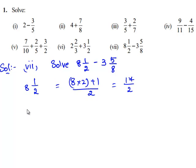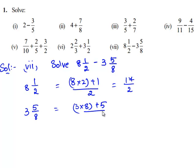Now we shall convert 3 5 by 8 into its improper form. So it is 3 times 8 plus 5 divided by 8, which is equal to 29 by 8.